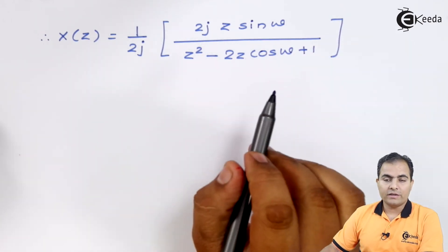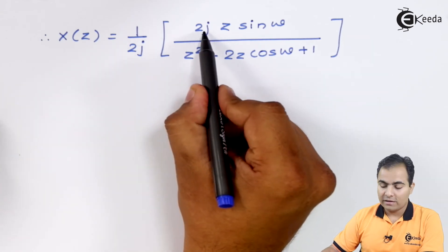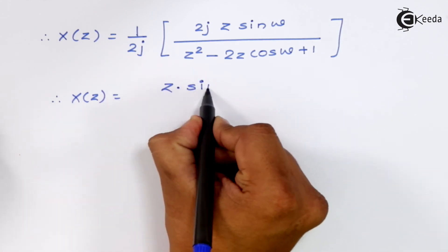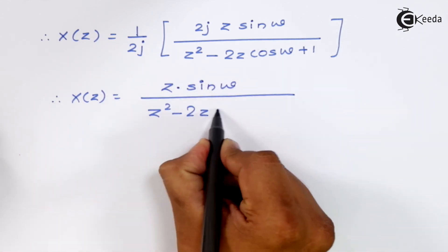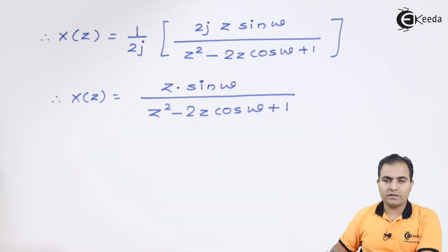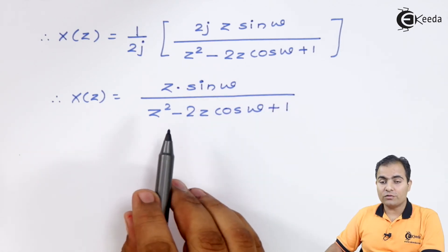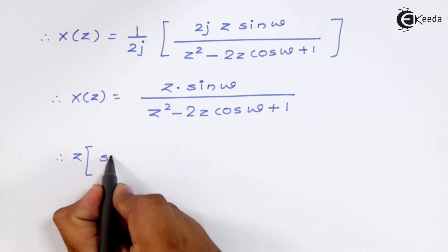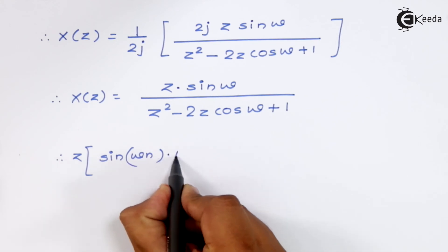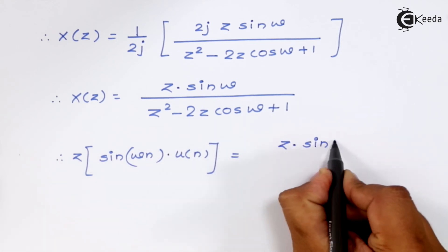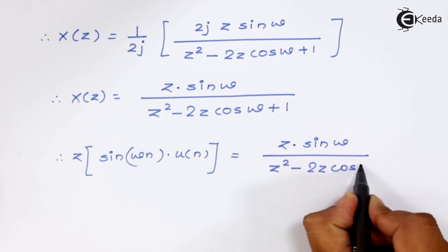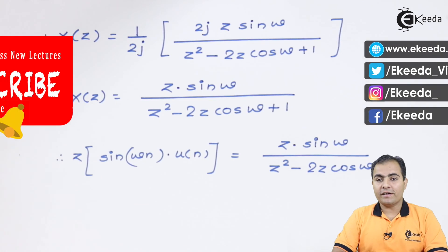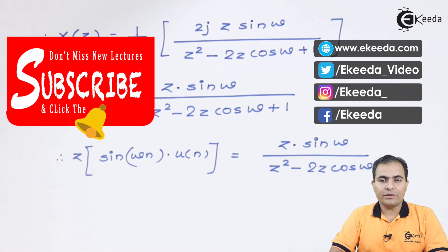So this was our result. The 2j terms cancel, giving us the final Z-transform of sin(ωn)·u(n). So thank you for watching this video. Stay tuned with Ikeda and subscribe to Ikeda for further videos. Thank you so much.